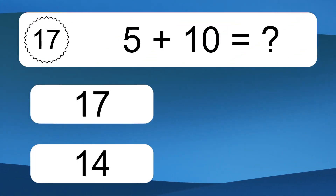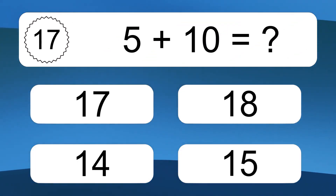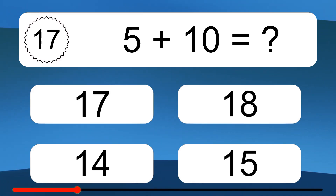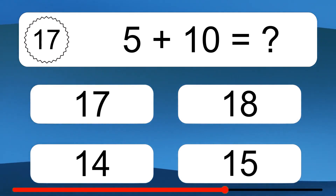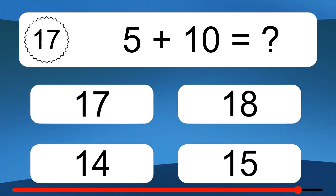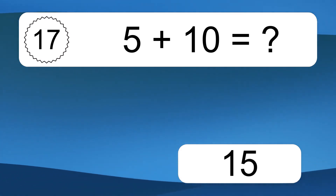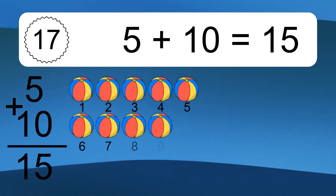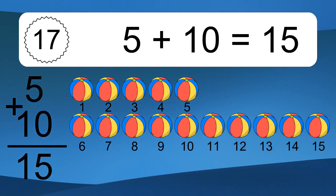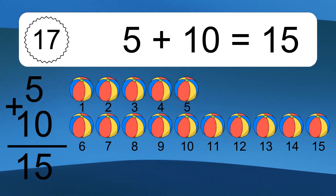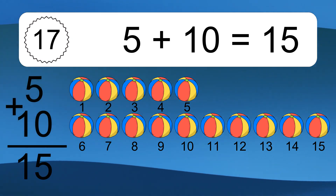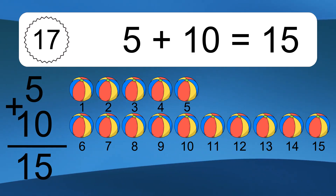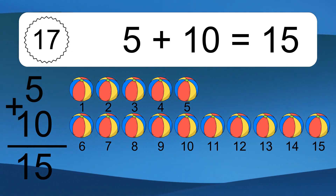5 plus 10 equals what? 5 plus 10 equals 15. Let's count it. 1, 2, 3, 4, 5, 6, 7, 8, 9, 10, 11, 12, 13, 14, 15.